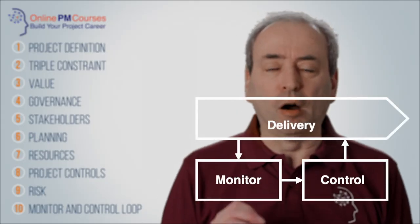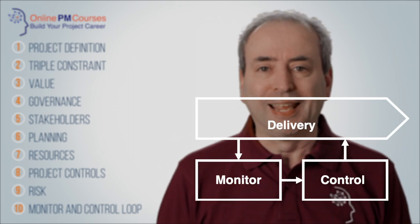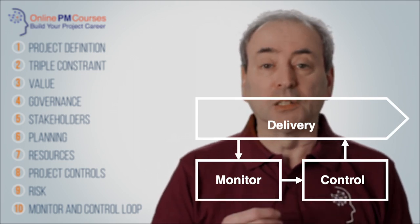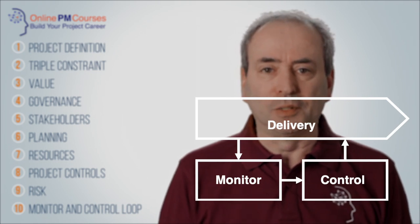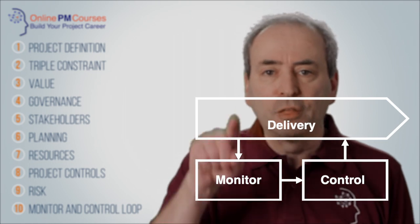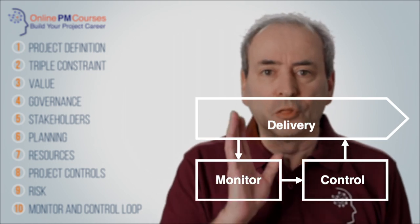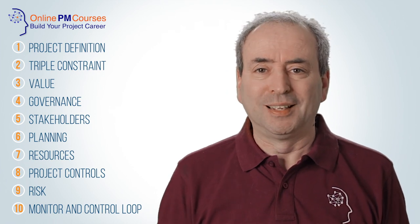At number 10, the last of my vital core concepts, is the monitor and control cycle or the monitor and control loop. During delivery of your project, the most important thing you can be doing is monitoring what's happening, and when the project starts to shift away from your plan, intervening to control the project. Then you get on with delivery, monitor what's going on and make more controls. The faster you go around that cycle, the more control you will have. If you wait too long to monitor, things will have gone substantially wrong and problems will multiply. If you check up frequently, you'll spot problems when they're small and interventions will be minor.